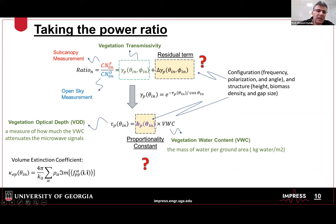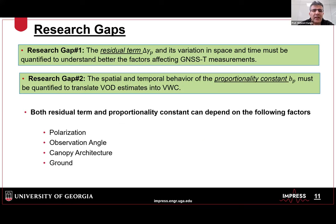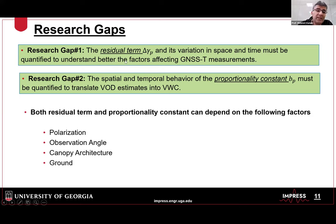Going from tau to vegetation water content, we expect a proportional relationship — more vegetation water content means higher VOD, with a proportionality constant. There are two parameters that need to be quantified — I call them research gaps. We have some knowledge of similar terms for agricultural fields, but not for forests. We want to quantify the residual term to understand the factors affecting our measurements, and we want to understand the proportionality constant to convert VOD to vegetation water content. These depend on polarization, observation angle, canopy architecture, and possibly the ground.